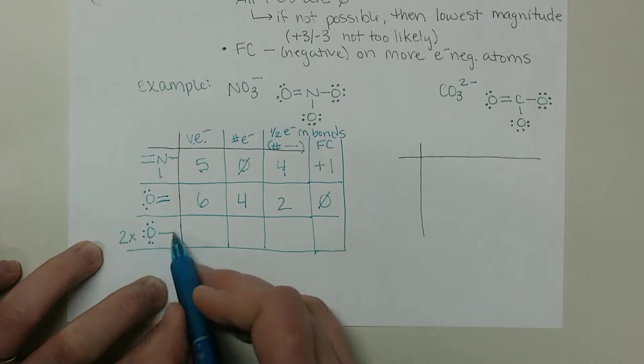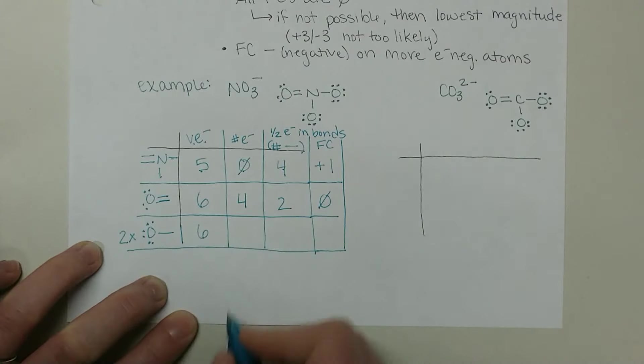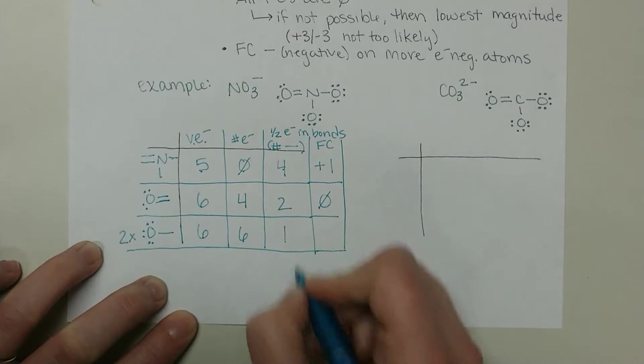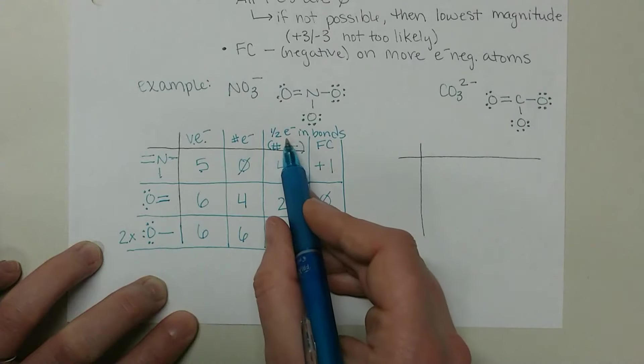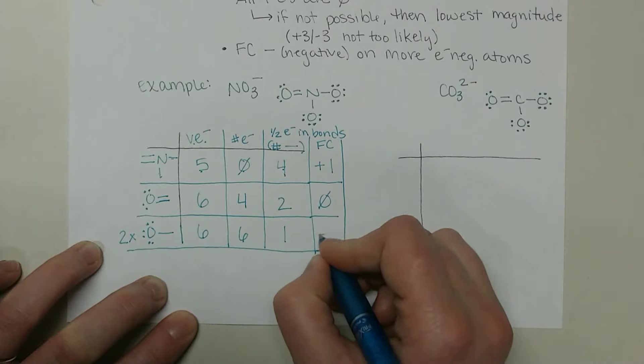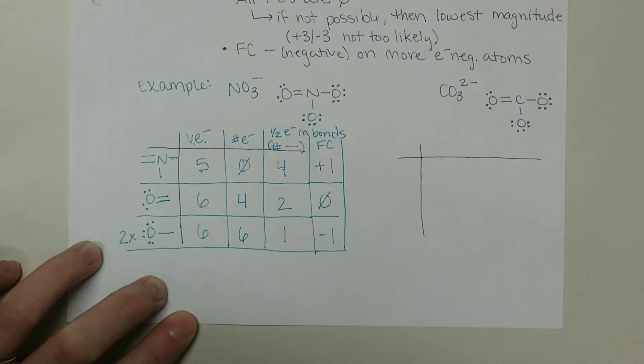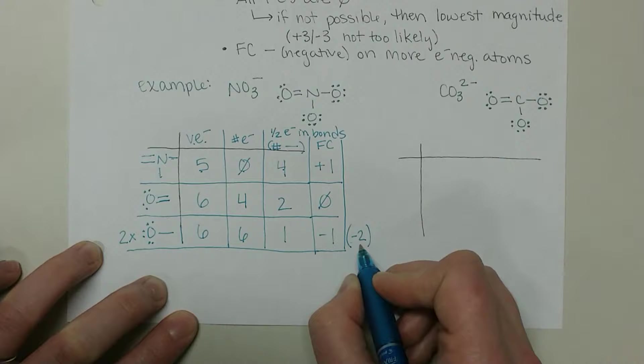Then for our single bound oxygen, six valence electrons, six dots, one line or two electrons in the single bond. We want half of that for one. Six minus six minus one gives us a negative one. But remember, there are two of them, so that's a total of negative two formal charge.